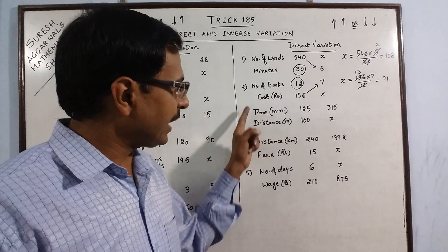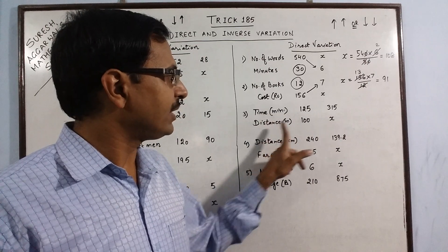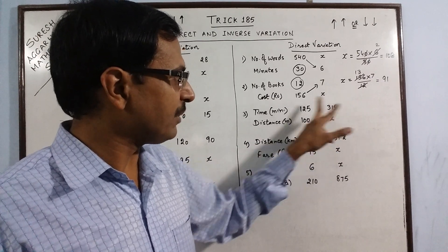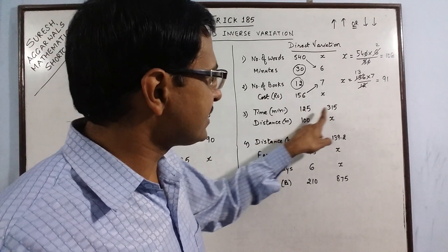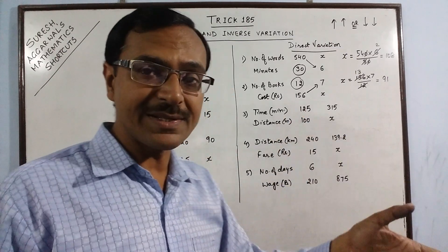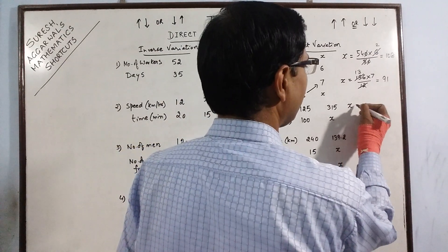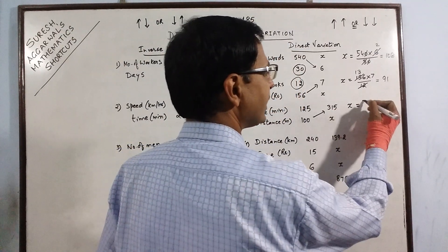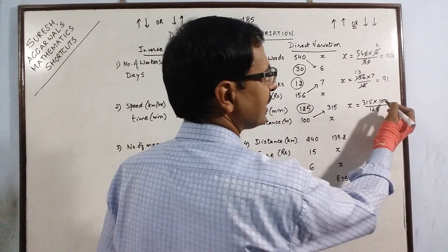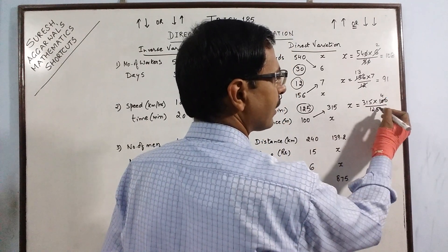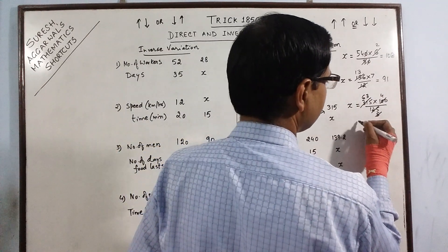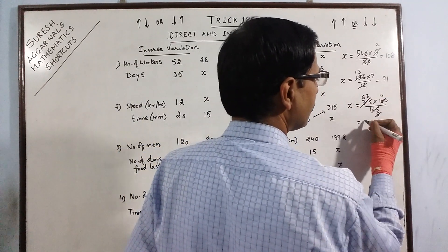Next: the time taken to cover a distance of 100 meters is 125 minutes. In 350 minutes, how much distance will be covered? Here time is increasing, so obviously you will cover more distance — distance also increases. Again direct variation. Cross-multiply the two known quantities, 350 and 100, and divide by 125. Cancelling by 25 gives 4 and 5; 5 cancels exactly, giving 63 into 4, which is 252. The answer is 252 meters.